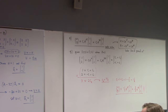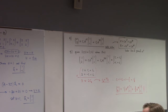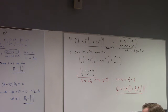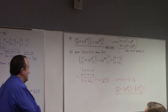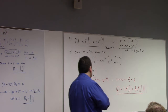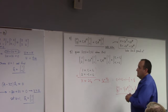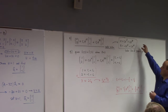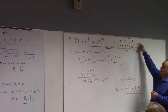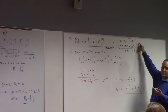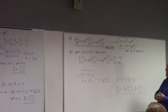Student question: can we go from the initial condition using scalar form and then convert back to vector form? Yes—you could have plugged the initial conditions directly into the scalar equations to get 1 equals c1 plus c2 and 2 equals minus c1 plus c2. There are many paths to the same answer.